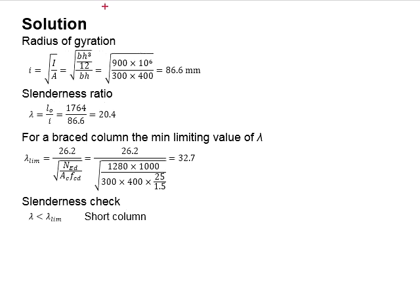Next, you determine the radius of gyration. Substitute the relevant value. You will obtain the radius of gyration, 86.6 mm. From there, you will be able to obtain the slenderness ratio, which is equal to 20.4.